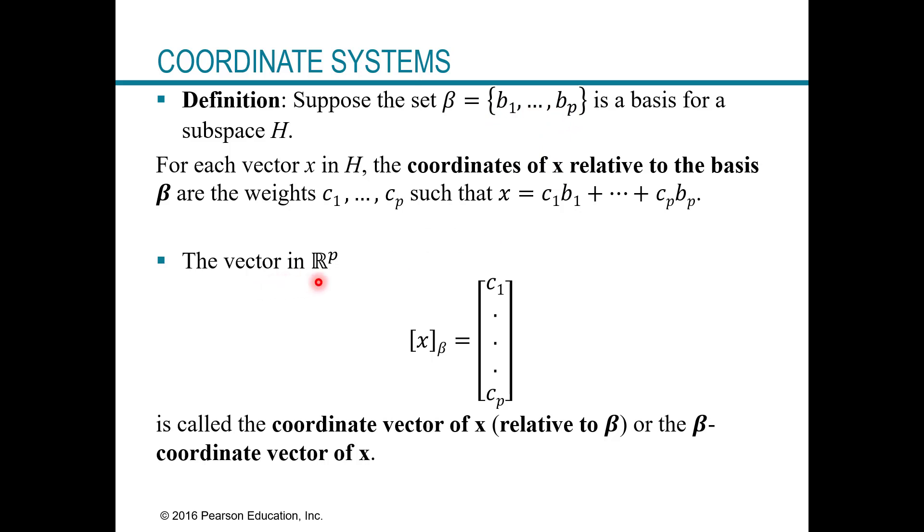And then the vector x sub B, or we call it the coordinate vector of x relative to B, we also call it B coordinate vector of x, is just the vector containing those weights, where the elements of the vector are those weights.